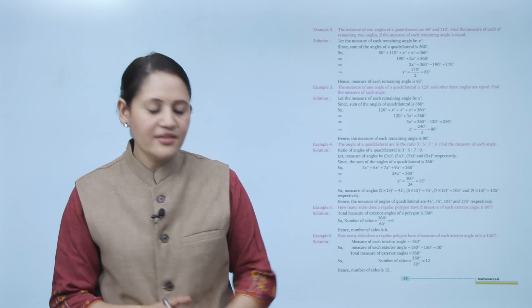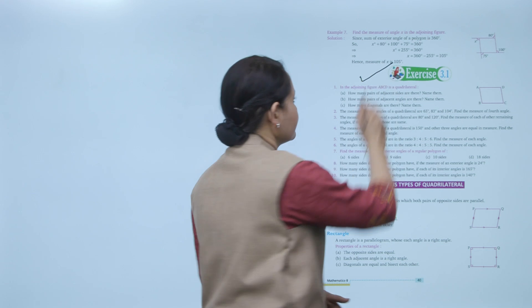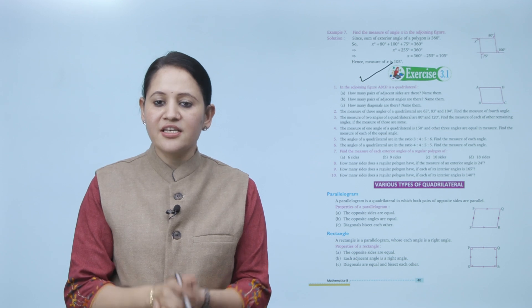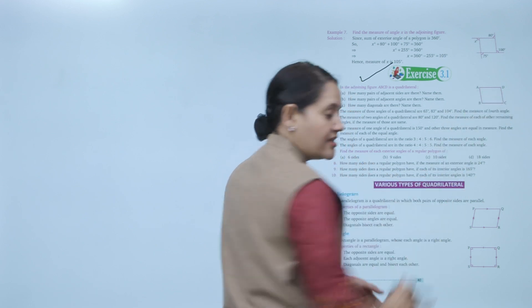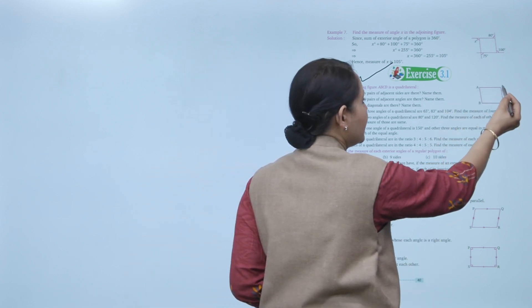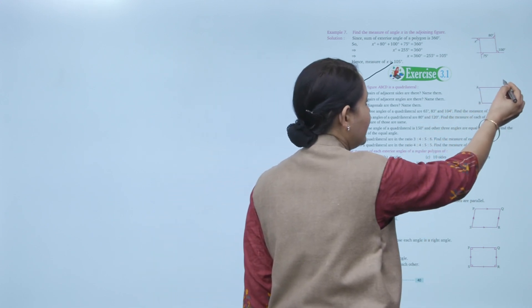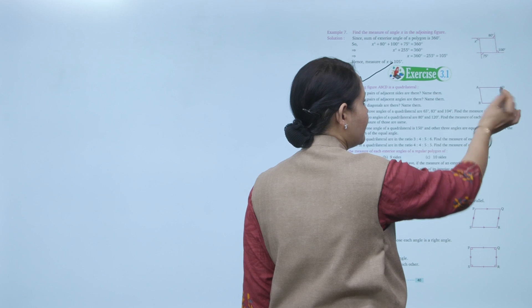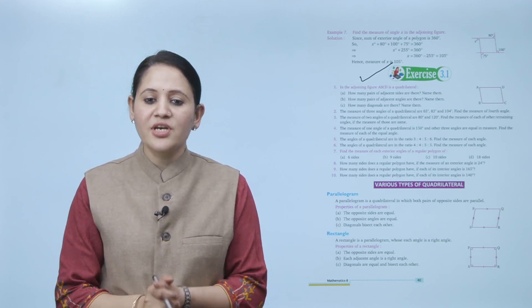Practice all the examples given here. Next is Exercise 3.1. In the adjoining figure ABCD is a quadrilateral. How many pairs of adjacent sides are there? Name them. Adjacent sides: AB and BC, AB and AD, BC and DC, BC and AB, AD and DC, AD and AB, DC and AD, DC and BC. Like this, you can make the pairs of adjacent sides. Practice all the questions of this exercise.